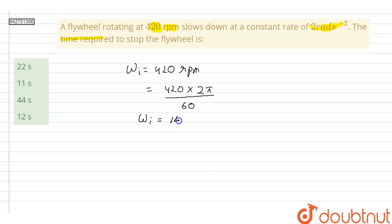From here, initial angular velocity will be equal to 14π radian per second. In the question we are given that flywheel comes to stop at the end, so final velocity omega f will be equal to 0. Also, constant rate of slowing down is given as 2 radian per second square, so this means angular acceleration alpha is minus 2 radian per second square.